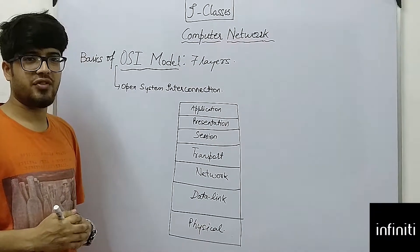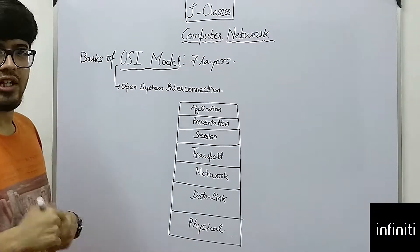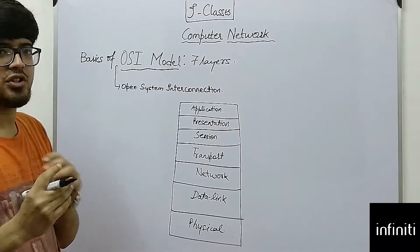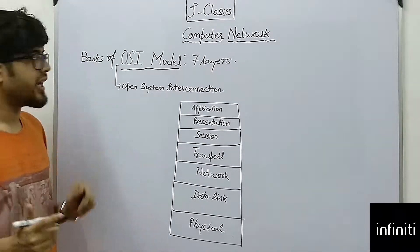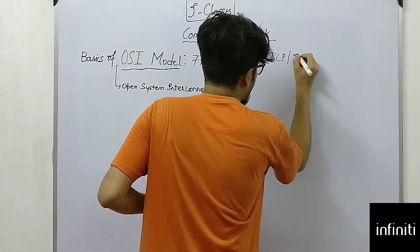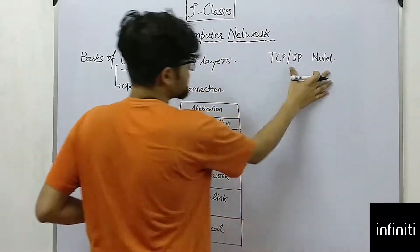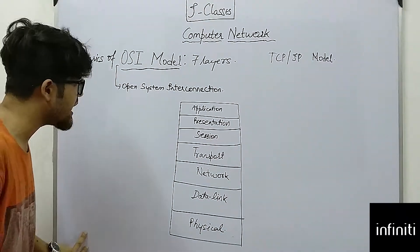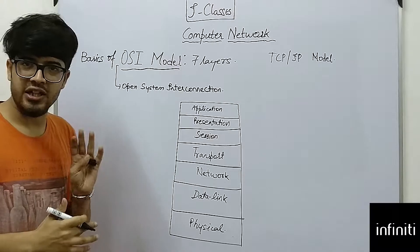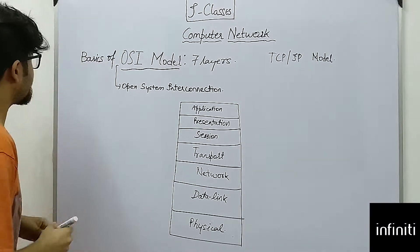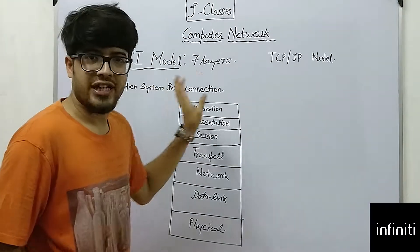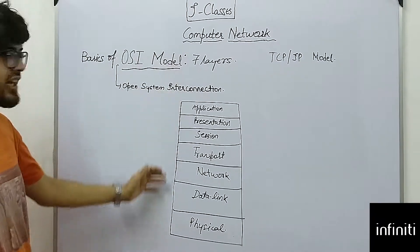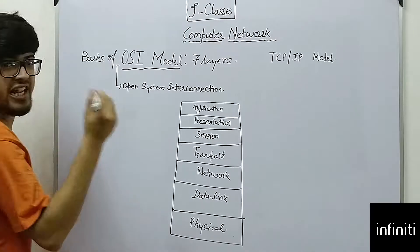Hi friends, this is Sagar from Infinity Classes. Today we are going to study about computer reference models. There are different reference models, of which two are the most important: the OSI model and the TCP/IP model. The TCP/IP model is used nowadays, but the OSI model helps in understanding what happens in a network. OSI stands for Open System Interconnection and it has seven layers — it is a layered architecture.